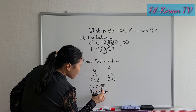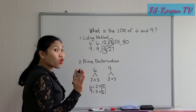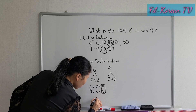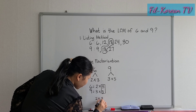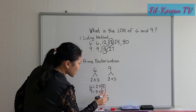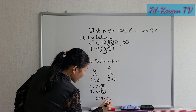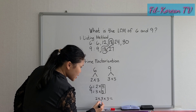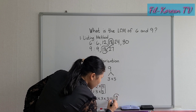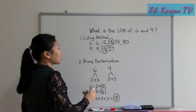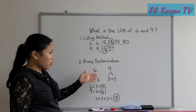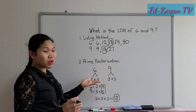We will multiply all these prime factors. The common prime factor pair is counted as 1. So we multiply 2 times 3 times 3: 2 times 3 is 6, and 6 times 3 is 18. So we get the same answer as in the listing method. This method is the prime factorization method.